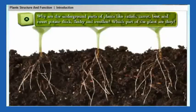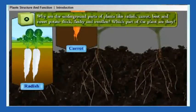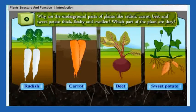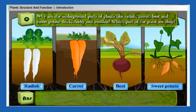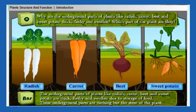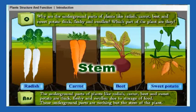Why are the underground parts of plants like radish, carrot, beet, and sweet potato thick, fleshy, and swollen? The underground parts of these plants are thick, fleshy, and swollen due to the storage of food. These underground parts are actually the modified roots of the plant.